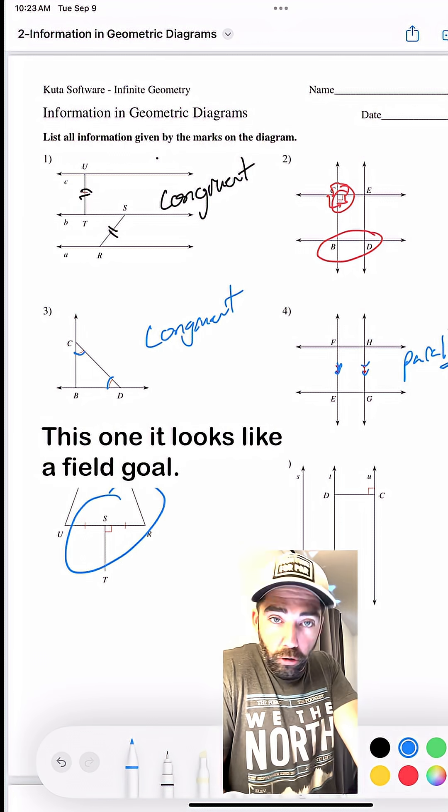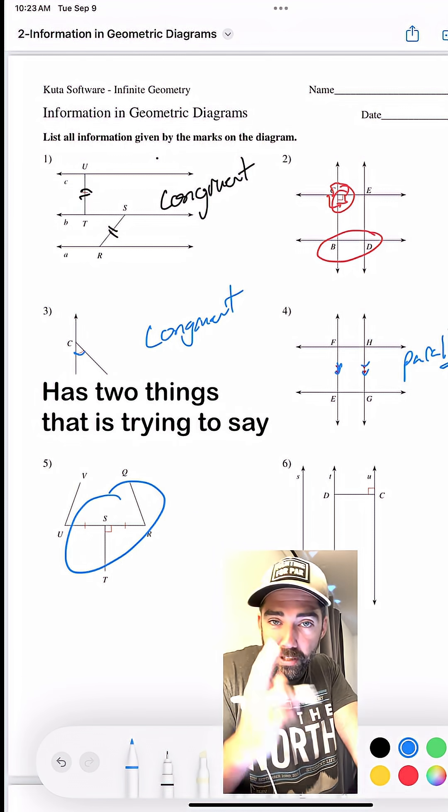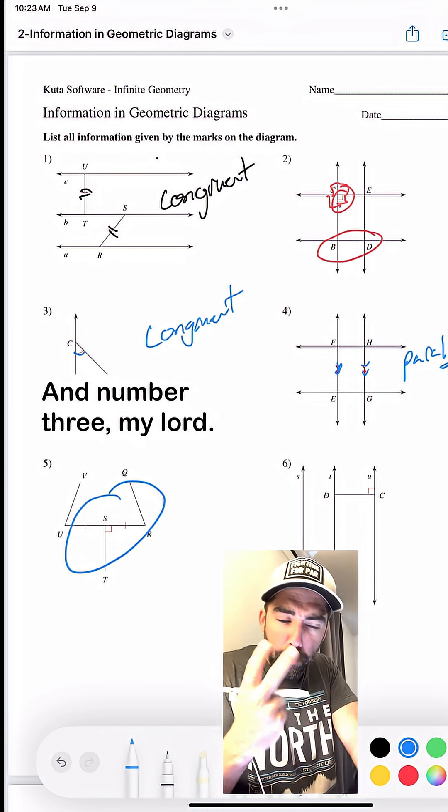This one that looks like a field goal, pretty awesome, has two things that it's trying to say. I almost said three. Pick number three, number three, my lord.